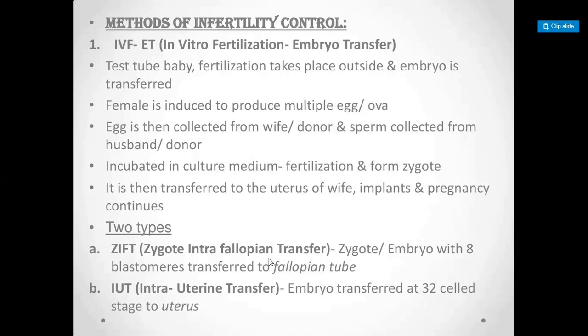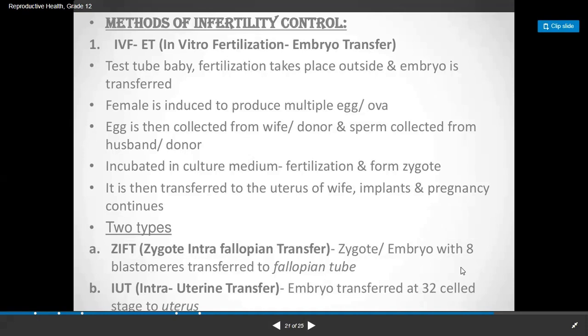ZIFT involves a zygote or embryo with up to 8-celled blastomeres, which is transferred into the fallopian tube. IUT involves transfer into the uterus. This distinction is important: ZIFT uses an 8-cell stage embryo, while IUT uses a 32-cell stage embryo.